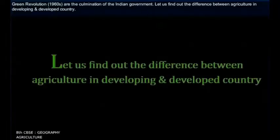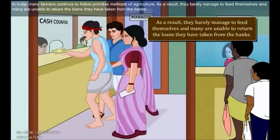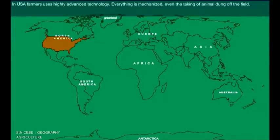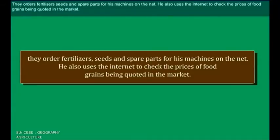Let us find out the difference between agriculture in developing and developed countries. In India, many farmers continue to follow primitive methods of agriculture. As a result, they barely manage to feed themselves and many are unable to return the loans taken from banks. In the USA, farmers use highly advanced technology — everything is mechanized, even the removal of animal dung from the field. They order fertilizers, seeds and spare parts for machines online, and use the internet to check the prices of food grains in the market.